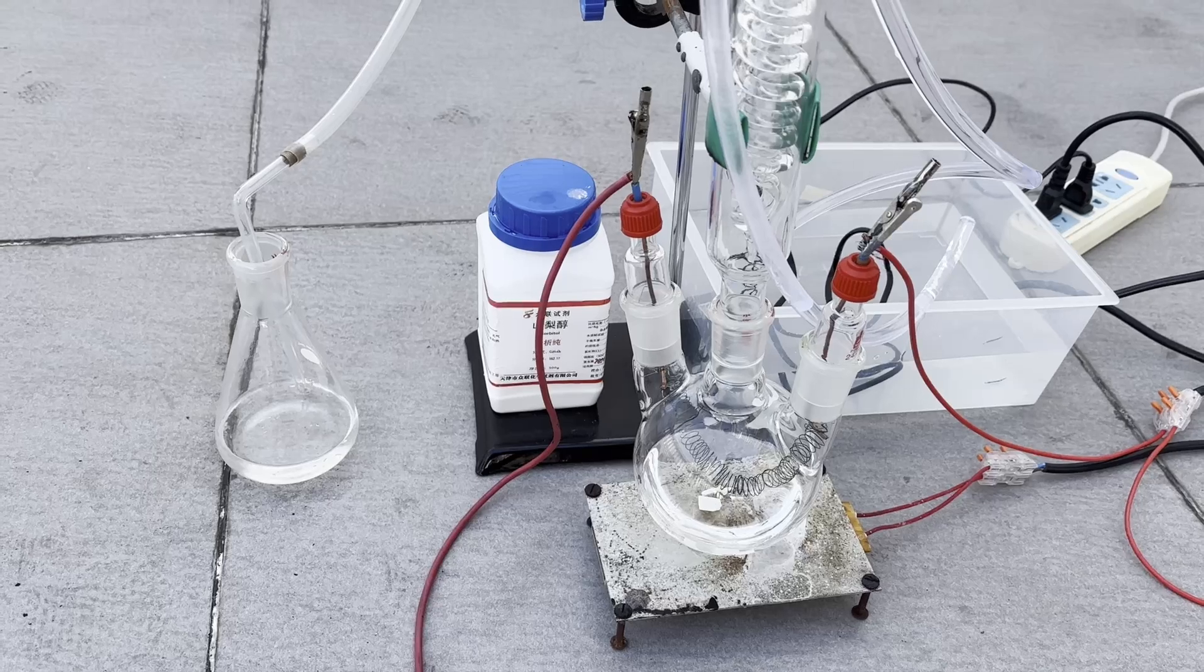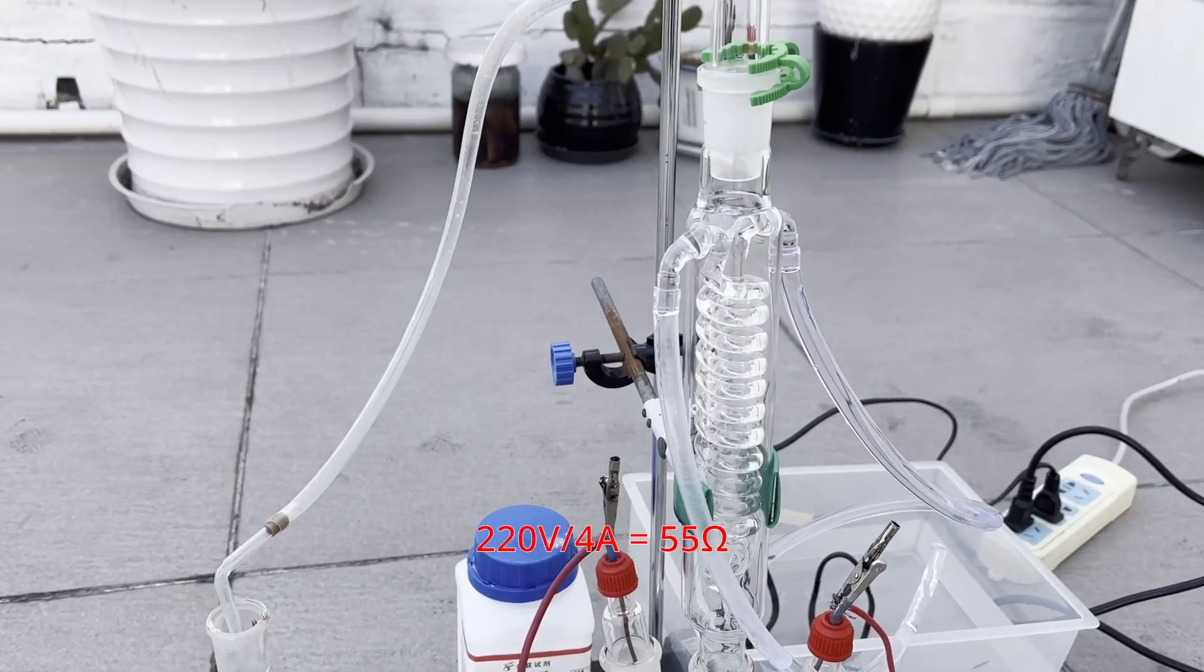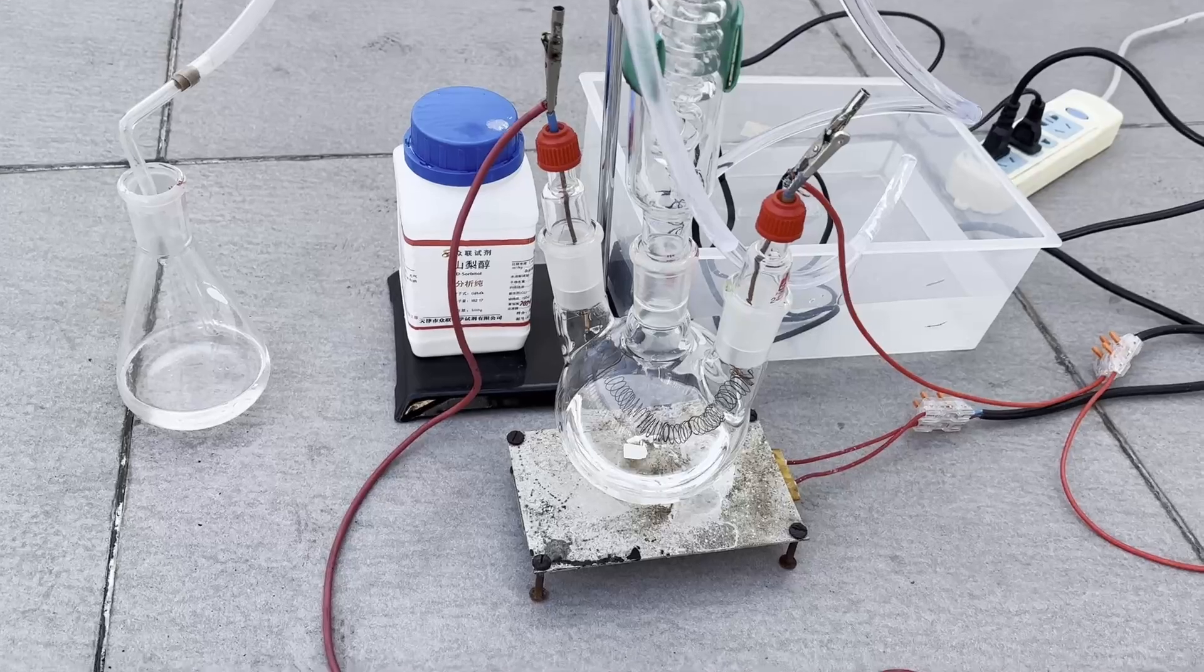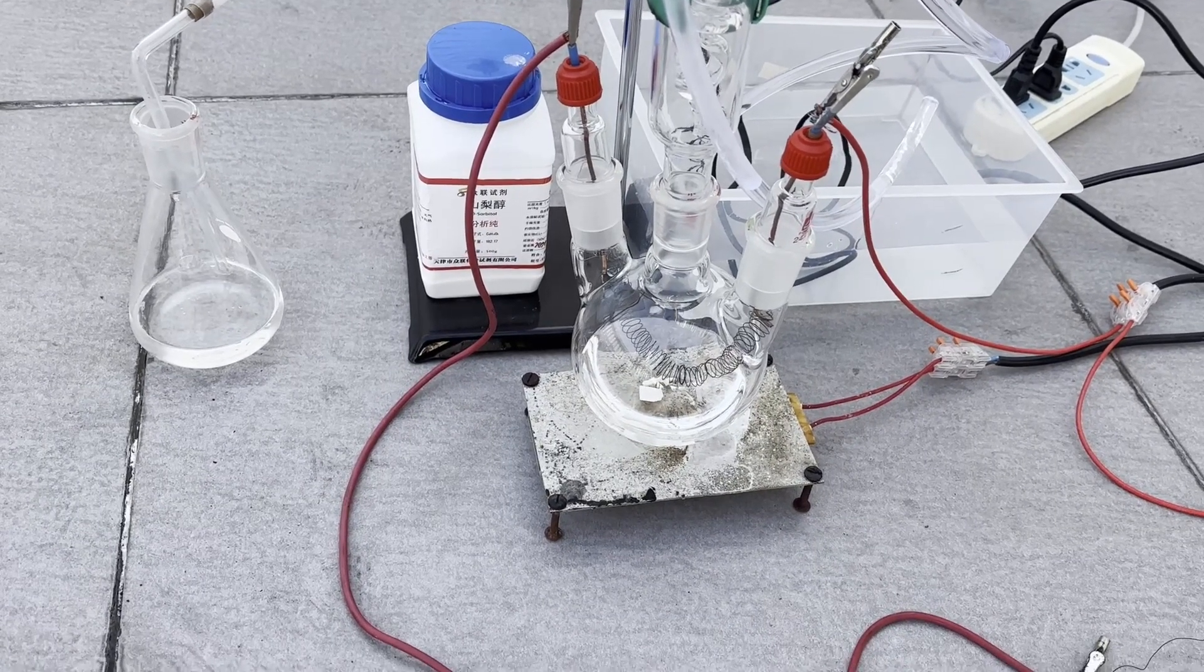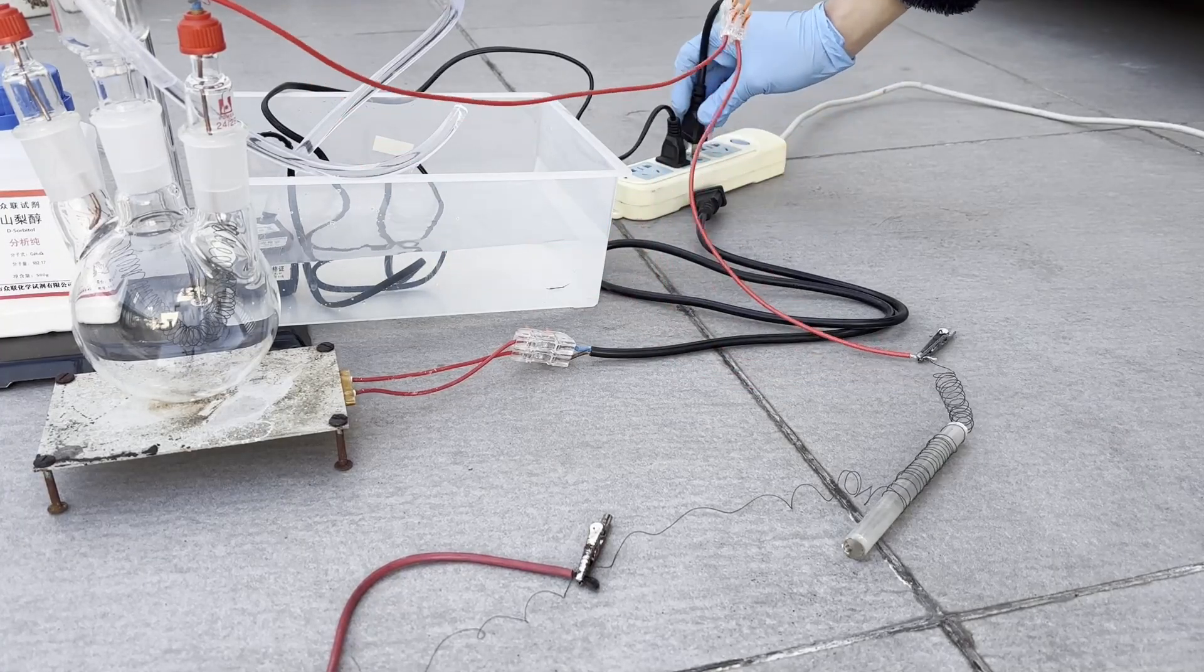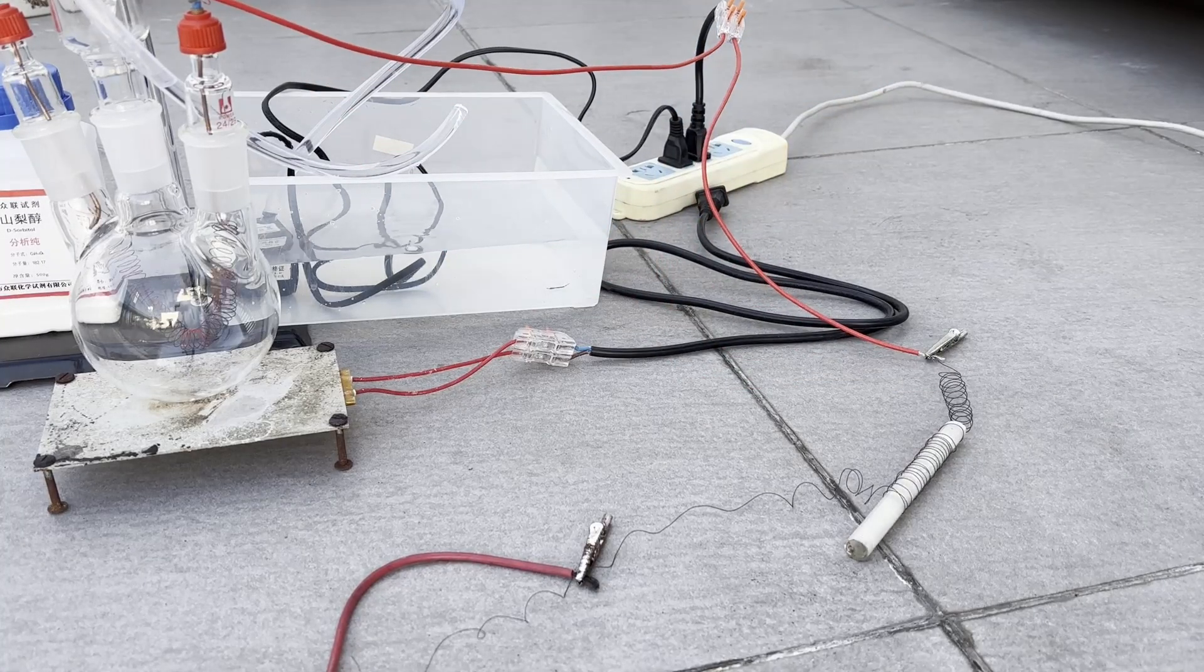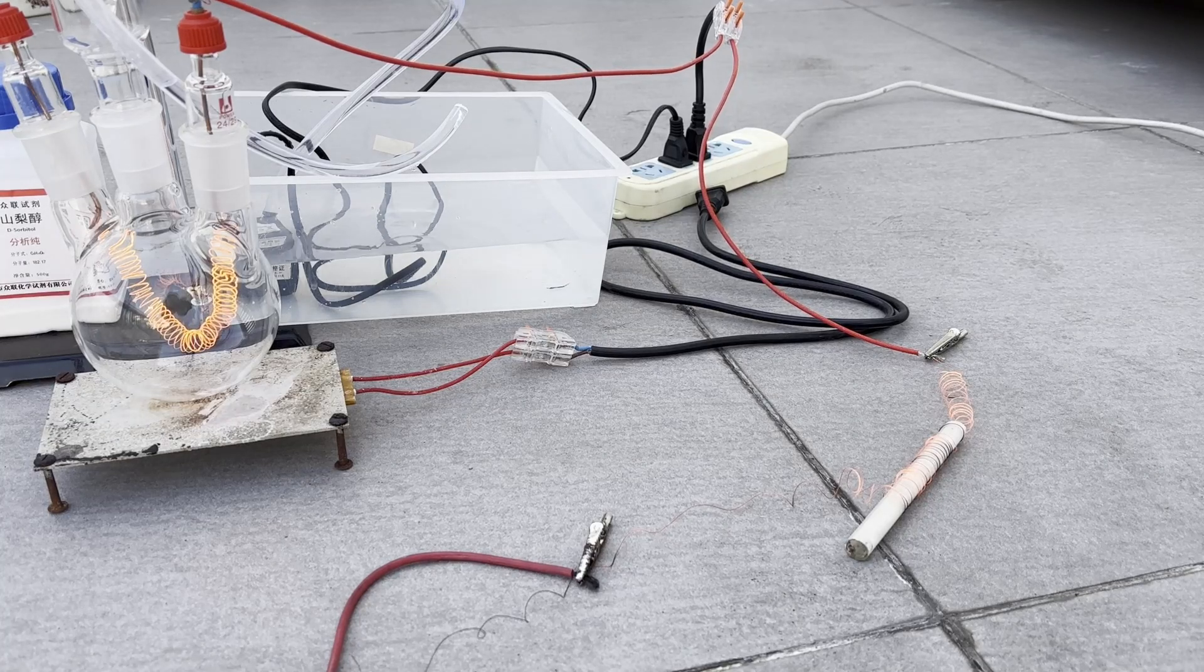The target current we want is 4A, so the resistance we need is 220V divided by 4A which is 55 ohms, which roughly corresponds to the resistance of 4 meters of the wire. So I winded up another 2 meter coil to act as an additional resistance, and connected the two coils in series. And yes, the coils glowed very nicely. We finally had high enough power to efficiently pyrolyze the acetone.